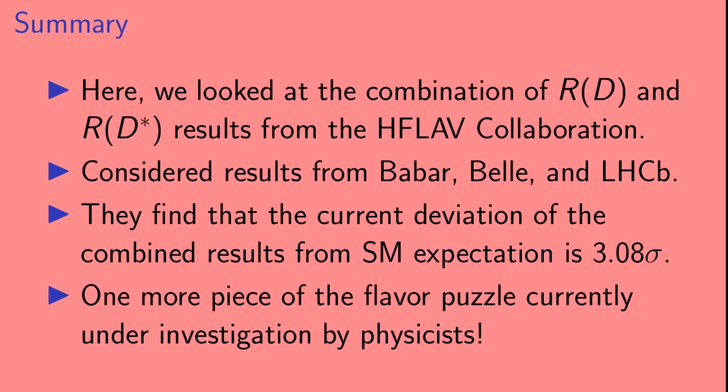Let's briefly summarize. Here we looked at the combination of R(D) and R(D*) results from the heavy flavor averaging group collaboration. They considered results from Babar, Belle, and LHCb. They find that the current deviation of the combined results from the standard model expectation is 3.08 sigma. And this is one more piece of the flavor puzzle that is currently under investigation by physicists.